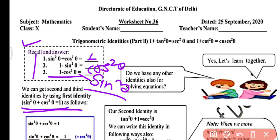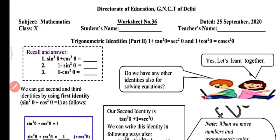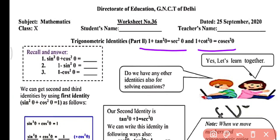So we covered those in the last video. Now, do we have any other identities for solving equations? Yes, we have two more identities: 1 plus tan² θ equals secant² θ, and 1 plus cot² θ equals cosecant² θ. Let's learn together.